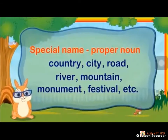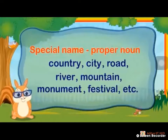Special names are nothing but proper nouns. Country, city, road, river, mountain, monument, festival — if I tell like this in general, they come under common noun. But if we tell the names of those particular places, they all come under proper noun. Naming words means names of people, places, animals or things — anything with a name comes under proper noun, common noun, or simply noun.